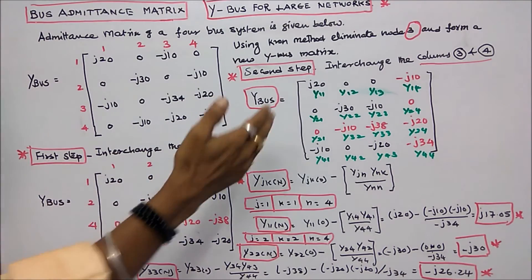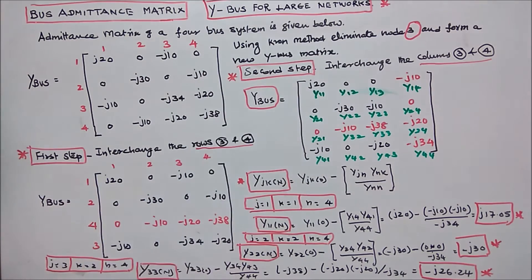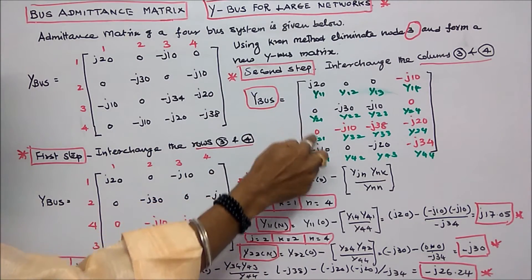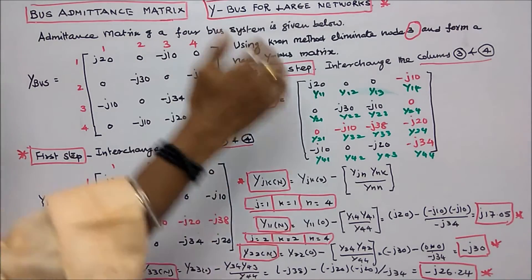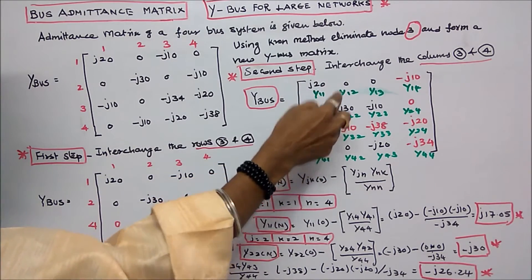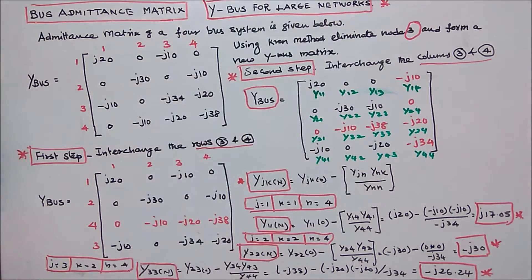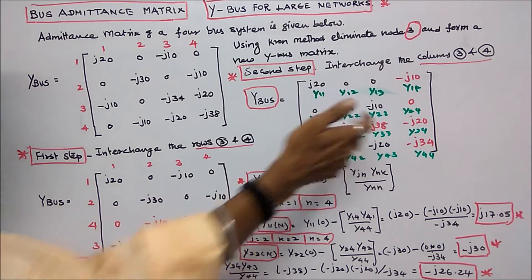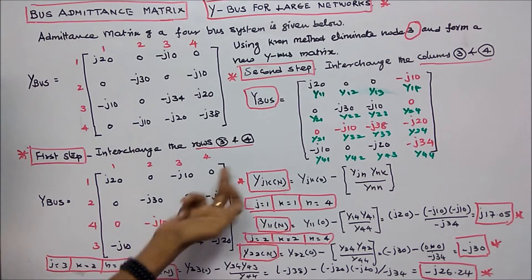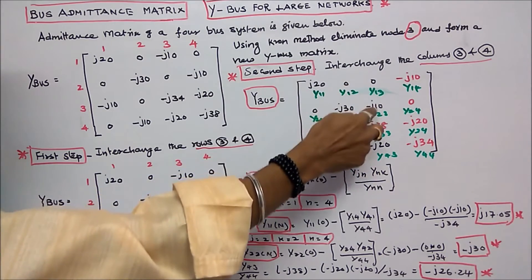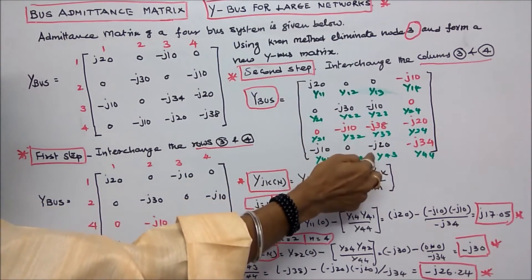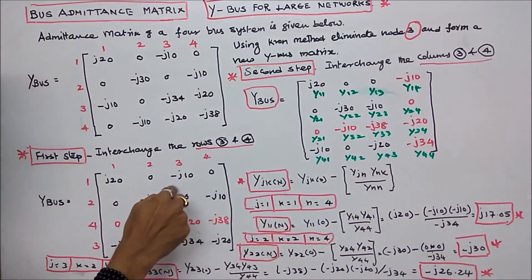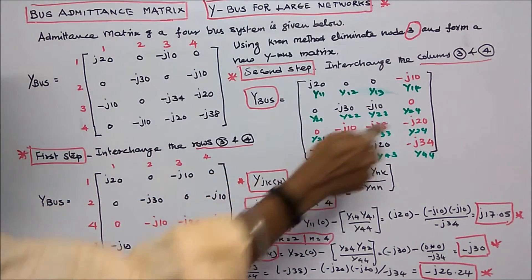Second step: interchange columns 3 and 4. The first column is j20, 0, 0, minus j10. The second column is 0, minus j30, minus j10, 0. The fourth column becomes the third column: 0, minus j10, minus j38, minus j20. The old third column becomes the fourth column: minus j10, 0, minus j20, minus j34.